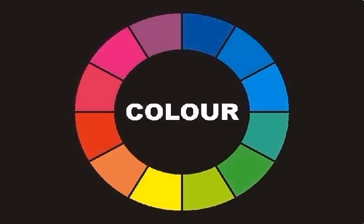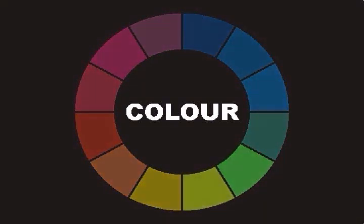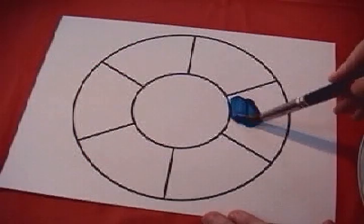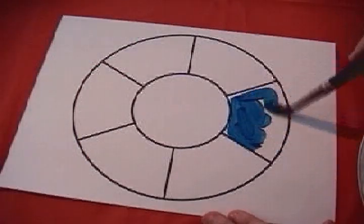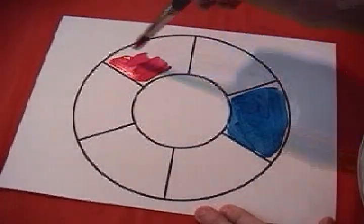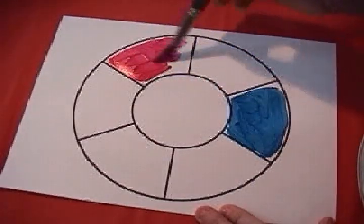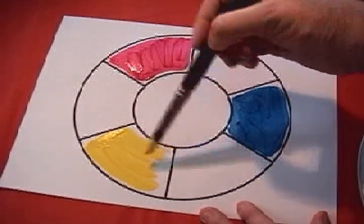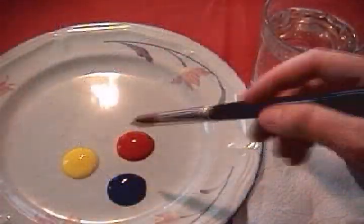Color theory is explored and practiced throughout the elementary grades. Therefore, it is certainly important to review simple color theory in order to gain a clear understanding. Here is a popular color exercise: students create color wheels on paper with tempera paint. First they paint the three primary colors, then they mix secondary colors and add them to their color wheels.